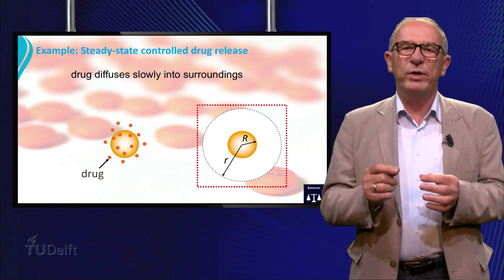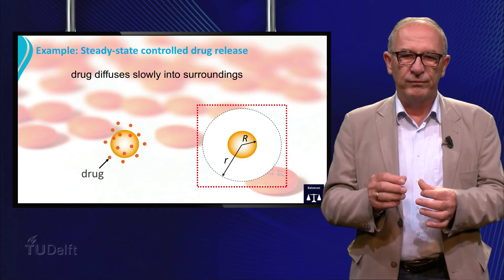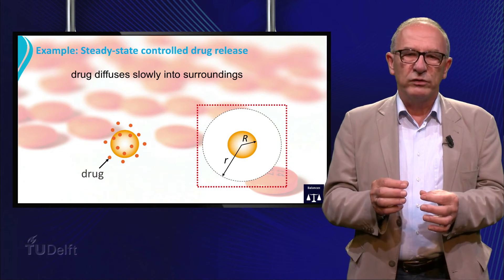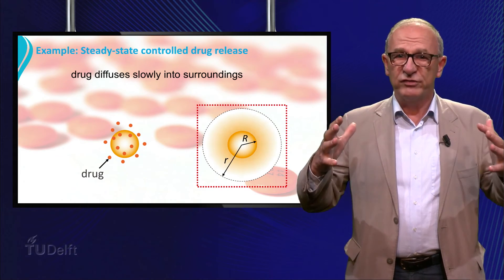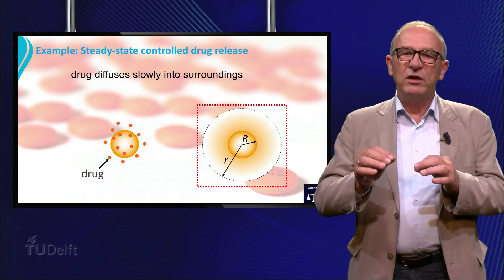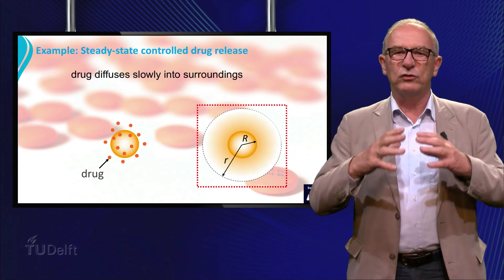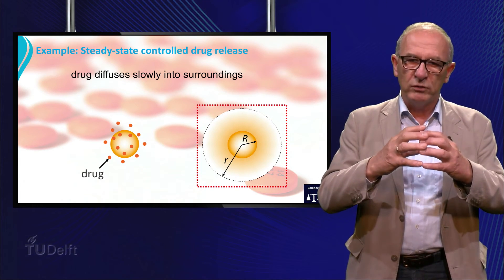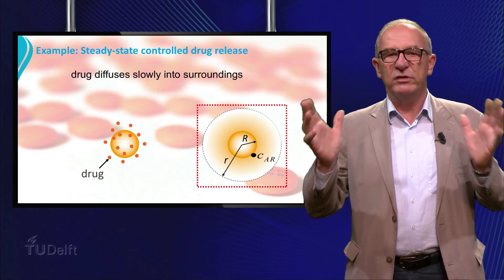Let's illustrate the microbalance with an example of the slow drug release of a pill. The active component diffuses slowly from the surface of the pill into its surroundings. Consider a balance between R and R plus dr and assume that the concentration at the surface of the pill is constant. And far away from this pill the surface concentration is about zero.